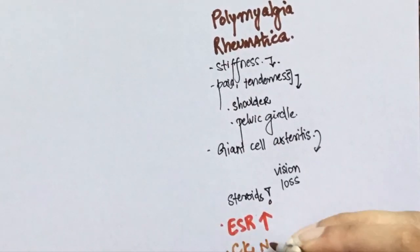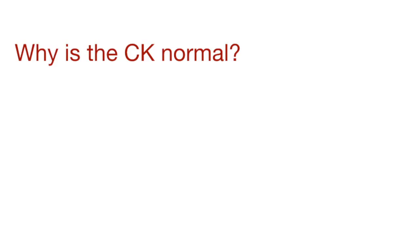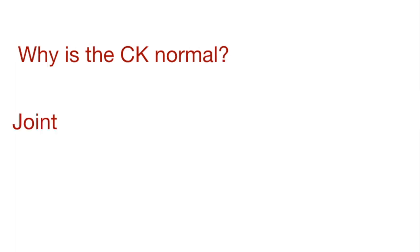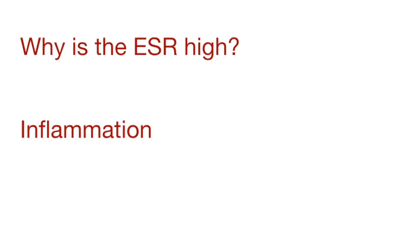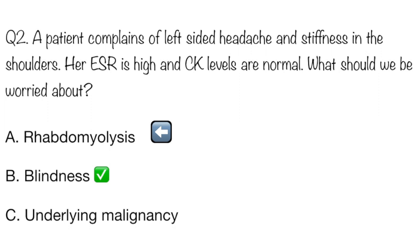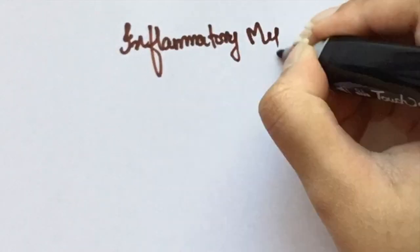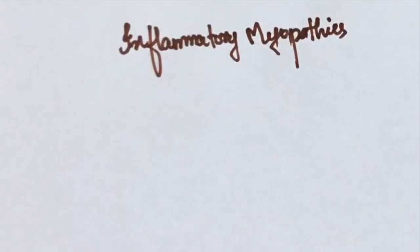The CK levels in these patients will be normal because there's no actual muscle damage taking place, but since there's inflammation involved the ESR levels will be high. Since this condition presents with joint stiffness, I think of it more as a joint issue than a muscle issue, so the CK will be normal. Since it is associated with arteritis, there is some kind of inflammation going on, which is why the ESR is high. Rhabdomyolysis is not likely in polymyalgia rheumatica; underlying malignancy is associated with inflammatory myopathies.